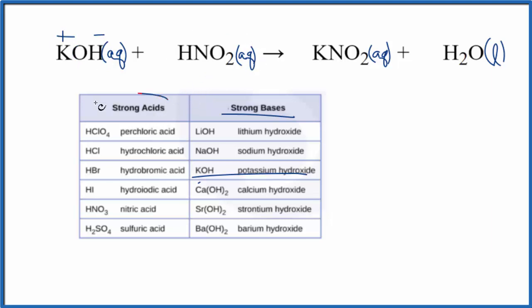For HNO2, we don't see that on our list of strong acids. It starts with an H, so we would think it's an acid. We don't see it on our list of strong acids, so that's going to be a weak acid. Because of that, this won't dissociate. We can't split this apart into its ions. It only dissociates just a little bit because it's a weak acid.